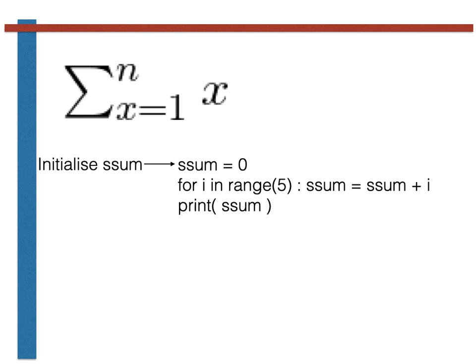So the instruction that is highlighted here is going to be repeated five times. Let's consider what happens during each of those five iterations.